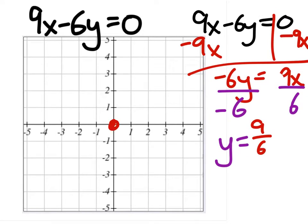Let's say we've got 9 over 6, right? We can simplify that by dividing both by 3. And we get y equals 3 halves x.